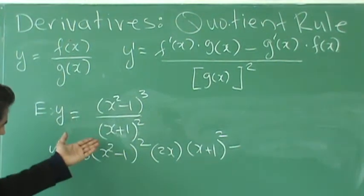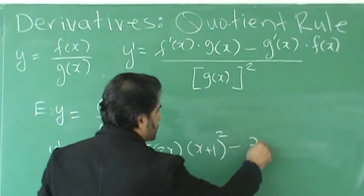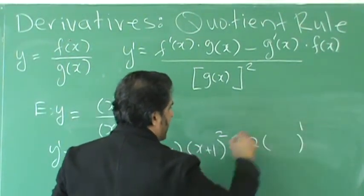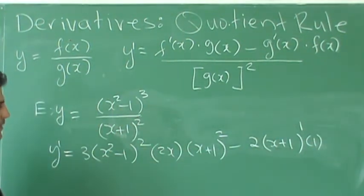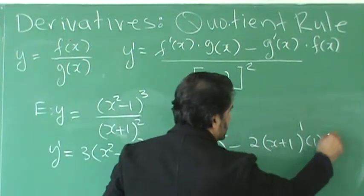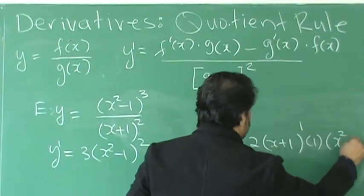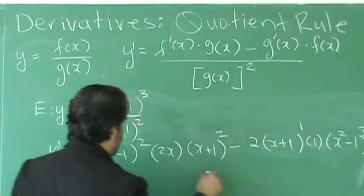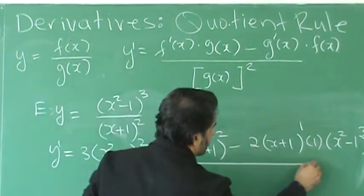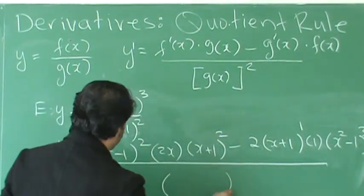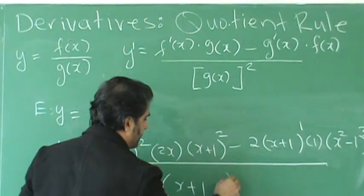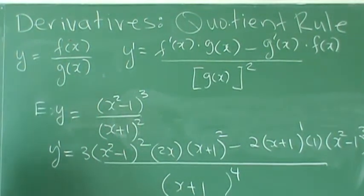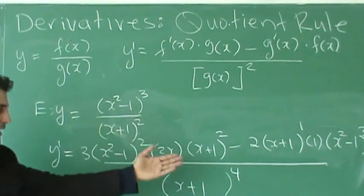Now we take the derivative of the bottom, we apply the chain rule, so we go from outside to inside. So this is the derivative of the bottom, then we leave the top as is, x squared minus 1 to the power of 3. And then what we do? We square the bottom. So we have x plus 1, power of power would be multiplied to the power of 4. When you square your square, it becomes 4.